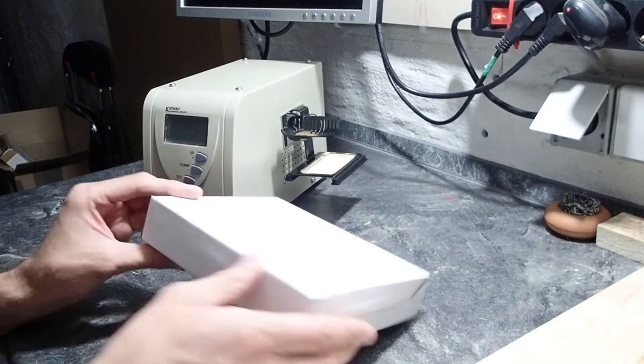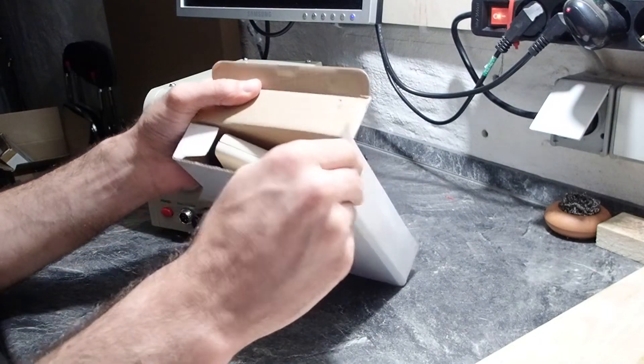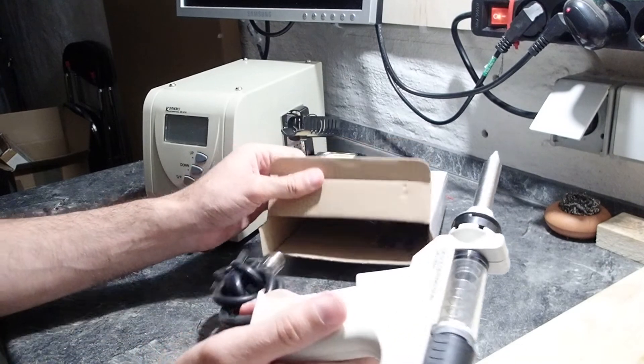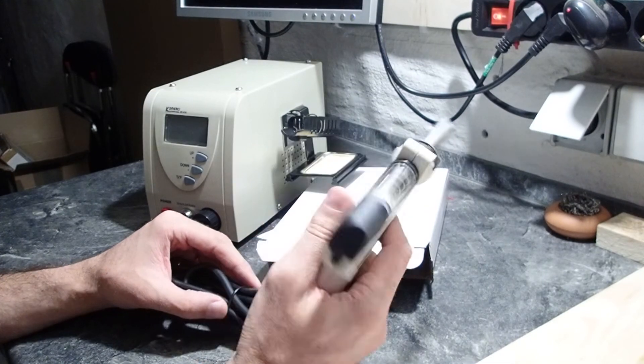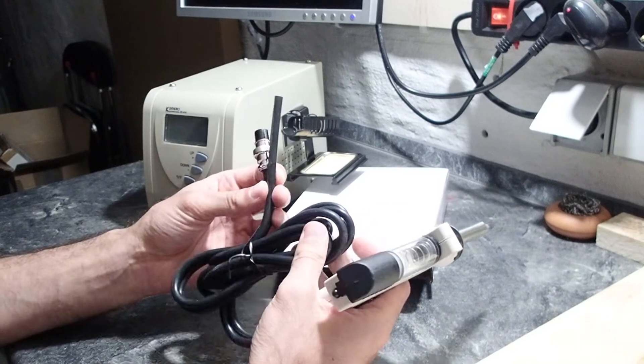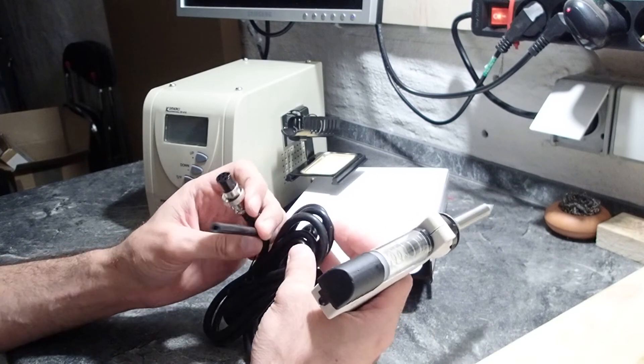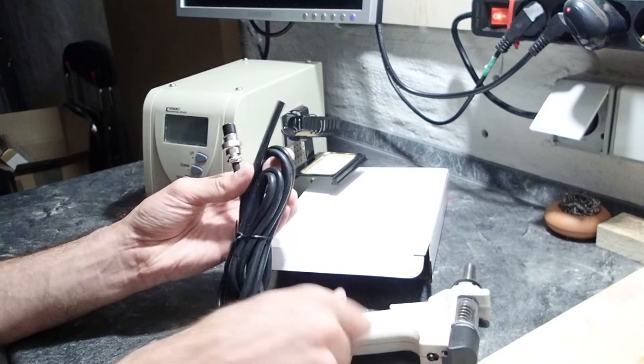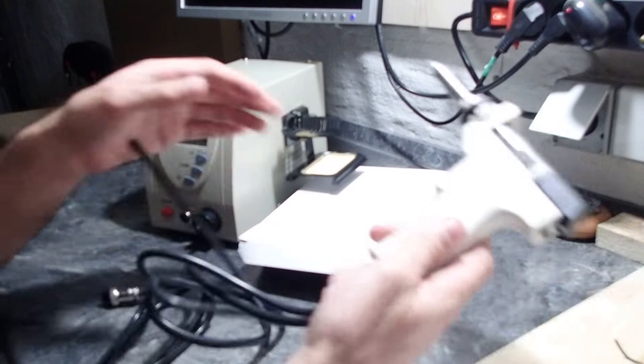And now to the most interesting part I think, the desoldering gun itself. It feels a little bit cheap but it's good in the hand. And there we have two cables or actually one tube for the pump and the electrical cable. They both go into the main desoldering station.